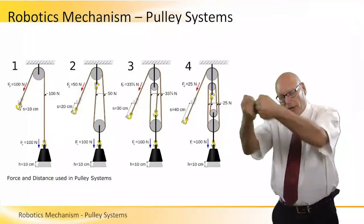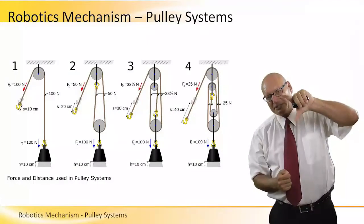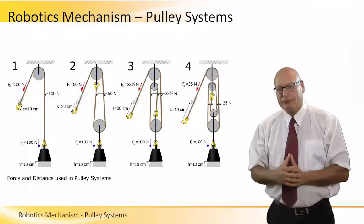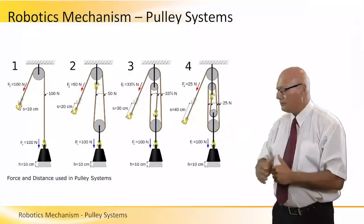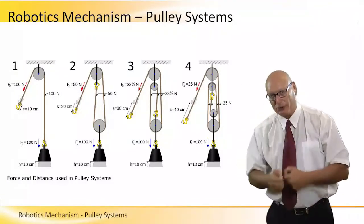So we pull it and we apply a force of 100 Newton, and we apply it for a distance of 10 centimeters. Then we have the second configuration of the pulley system, number two, where because of this particular configuration, we need to apply half the amount of Newton's force.